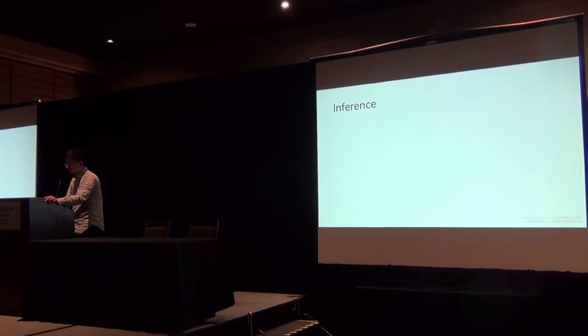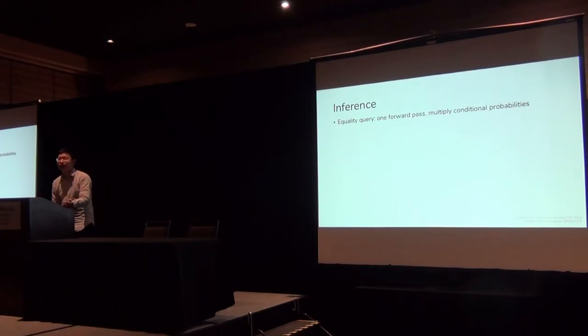During the inference phase, for equality query, it's actually very simple. We just feed a vector of filtering predicate values to the model. We perform one forward pass, multiply the conditional probabilities together to get the selectivity. But for range queries, things become much more challenging because we need to integrate over all possible regions covered by our filtering predicates, which is exponential.